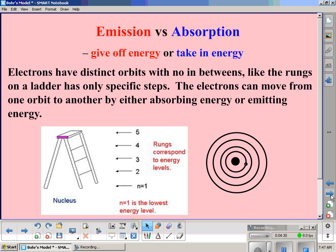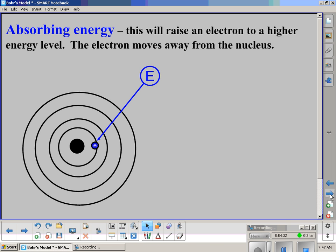Let's talk about absorbing energy. This will raise an electron to a higher energy level. We've got some energy that comes along, strikes the electron, and then the electron suddenly isn't there anymore because it moved to a higher energy level. It moves away from the nucleus, and that's what it looks like when it's absorbing energy—it moves away a little farther and is now moving a little faster.